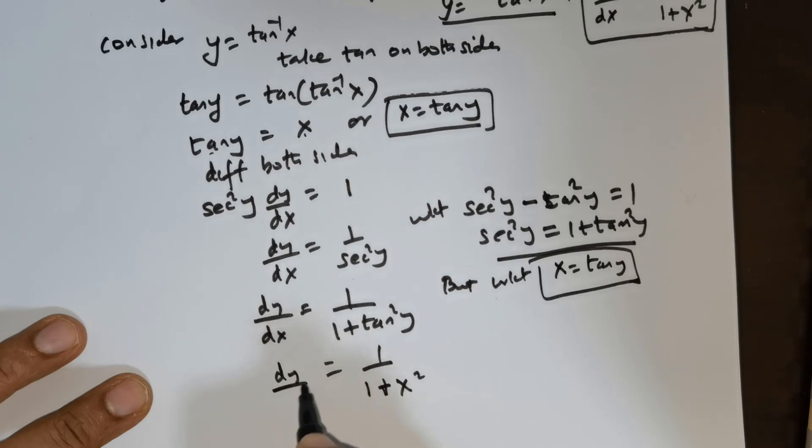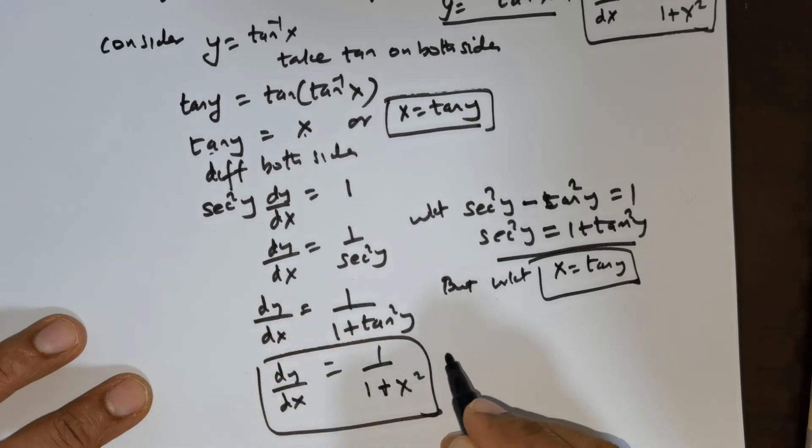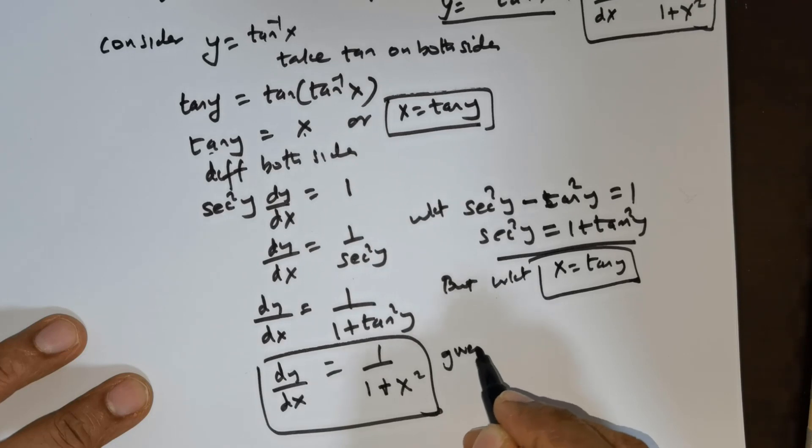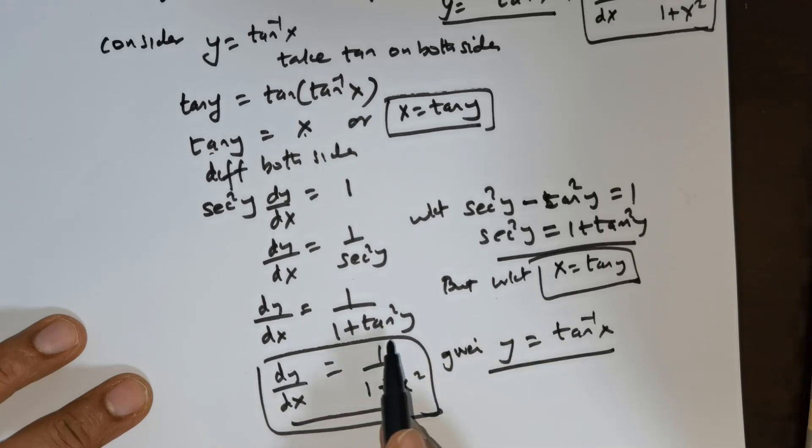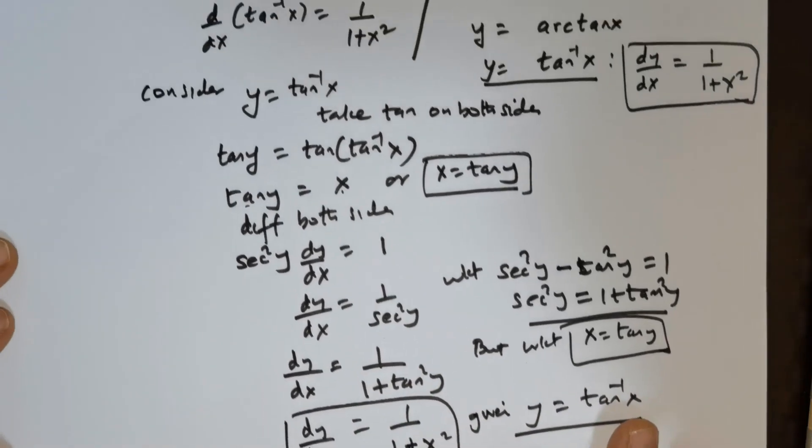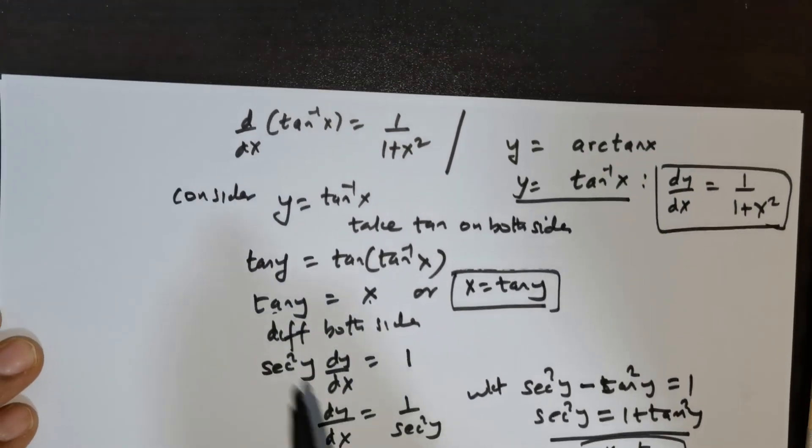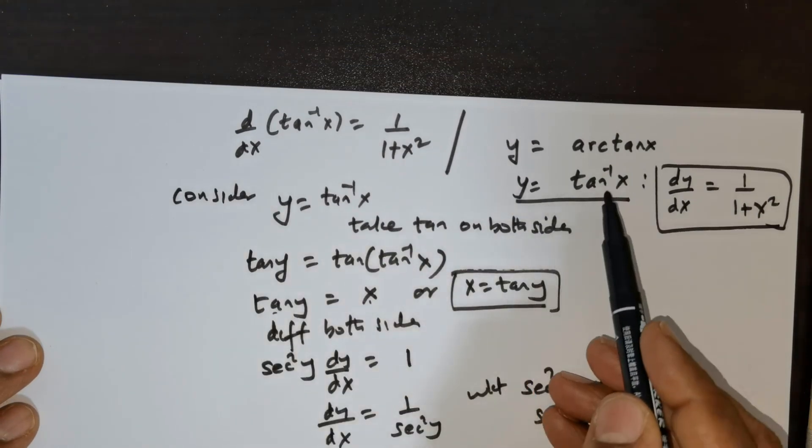What do we got on the left? dy/dx. But what is y? Given y is equal to tan inverse of x. And differentiating this provides us with 1 over 1 plus x squared. So that's the end of the proof for differentiating tan inverse of x.